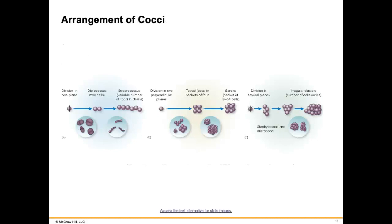Here are some pictures of what we just went over — single ones, diplo, strepto as a strip of them, tetrads in fours, sarcina packed in little squares of eight to sixty-four. You can see how some of the bigger arrangements look, and it's kind of cool to see something different under the microscope. Staphylo is those clusters of grapes — Staphylo means clusters, Strepto means strip or chain.